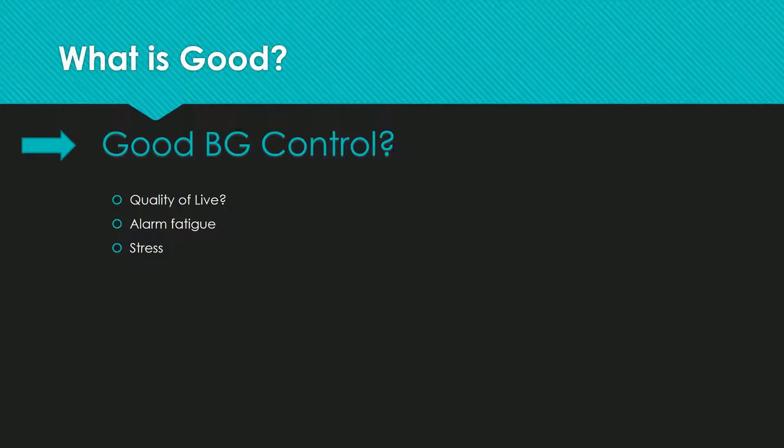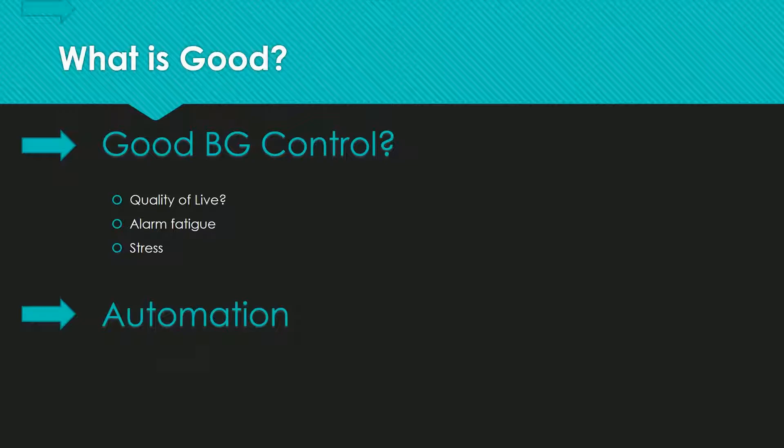Quality of life suffered. I didn't hear the alarms anymore — a common phenomenon called alarm fatigue. New possibilities to manage and then micromanage my numbers meant more needed alertness, more stress; it became hard to switch off and relax. It was just too much, and I knew I needed automation. I needed a closed loop.